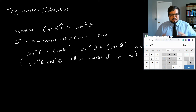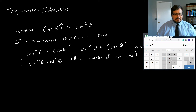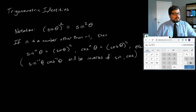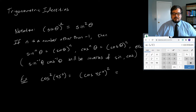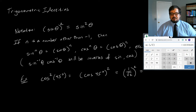So there's a little bit of weirdness here, but it is how it is. For example, if we want cosine squared of 45 degrees, that's defined to be cosine of 45 degrees, squared. Cosine of 45 degrees is 1 over the square root of 2, so we get 1 over the square root of 2, squared, which is 1 squared over the square root of 2 squared, which is 1 over 2.